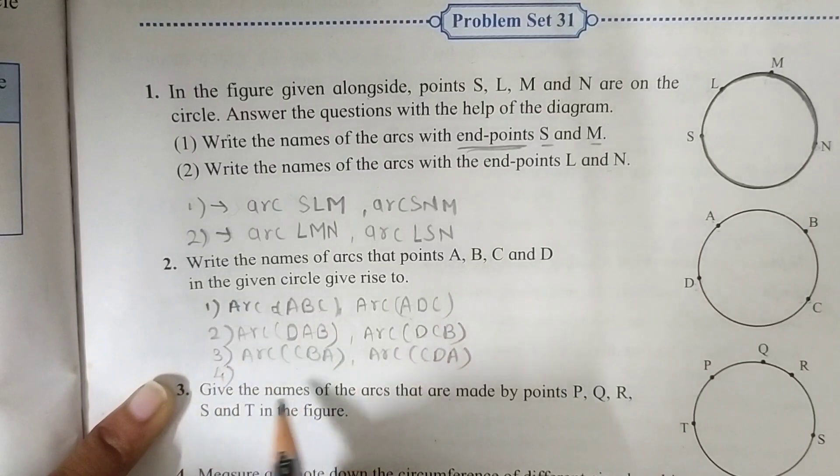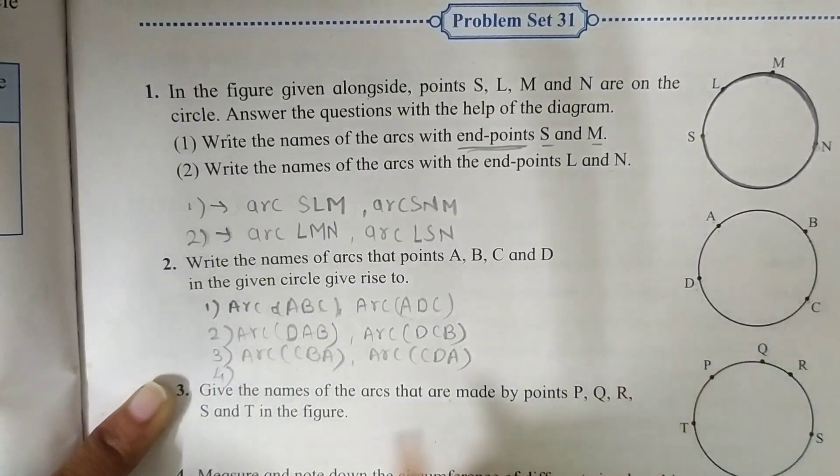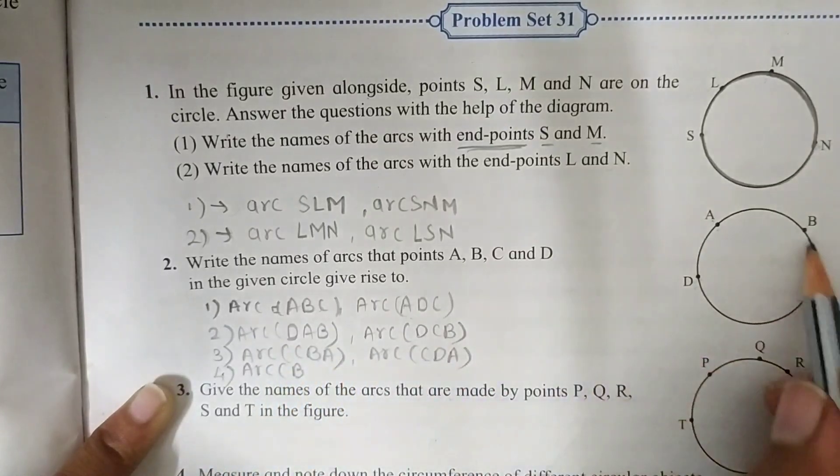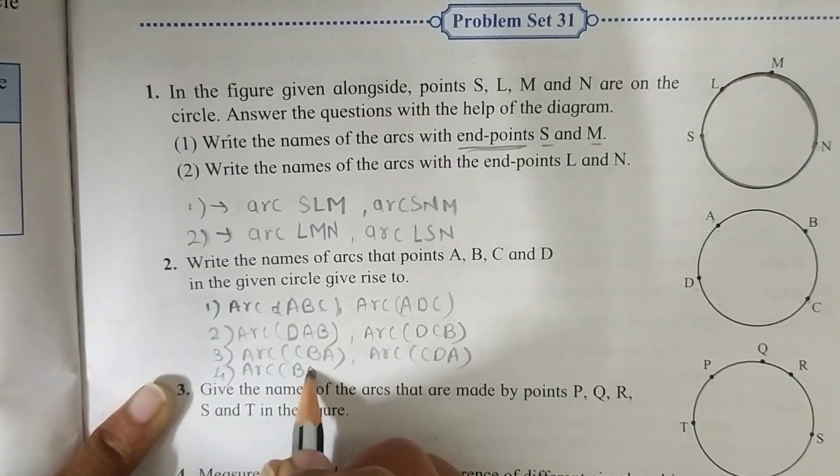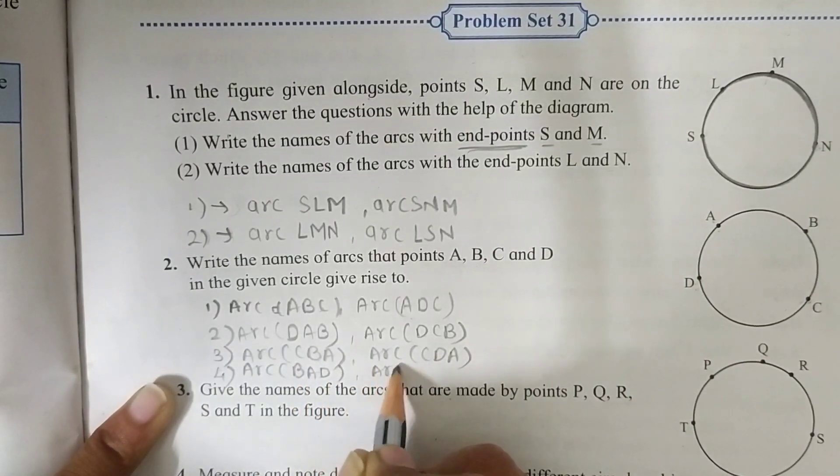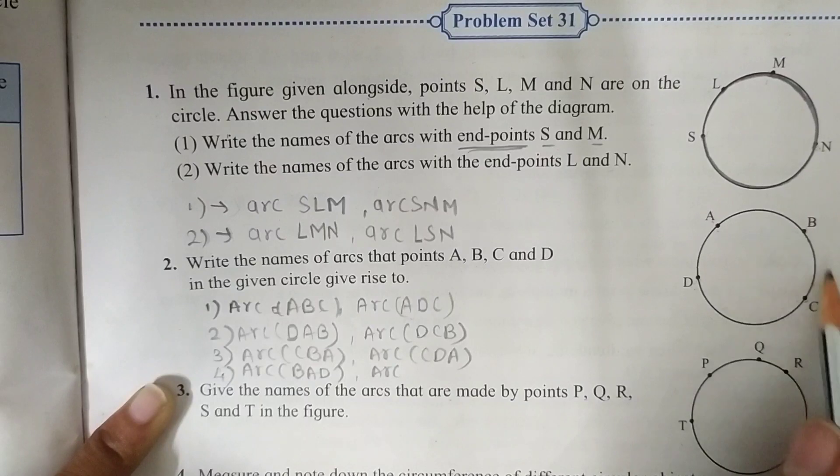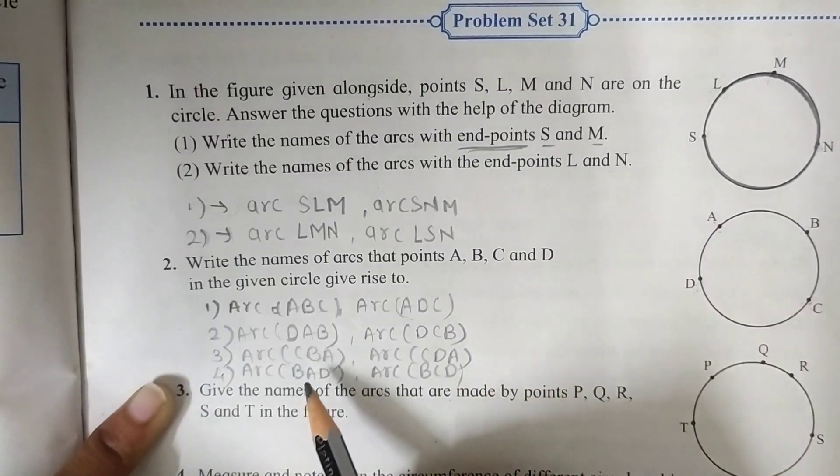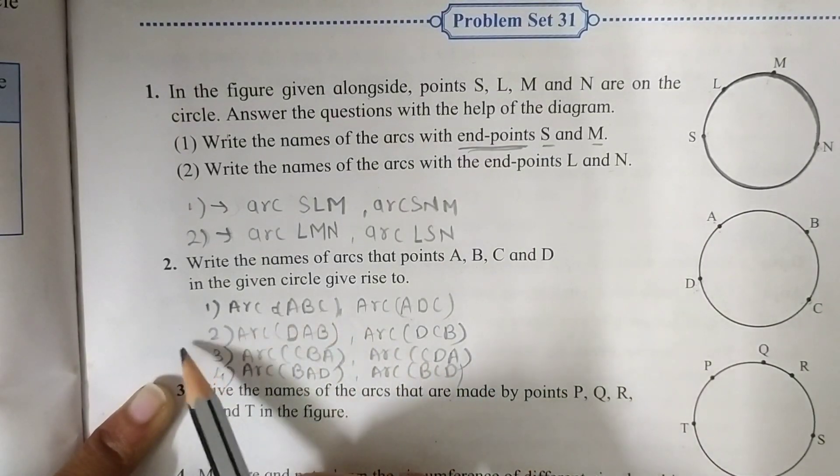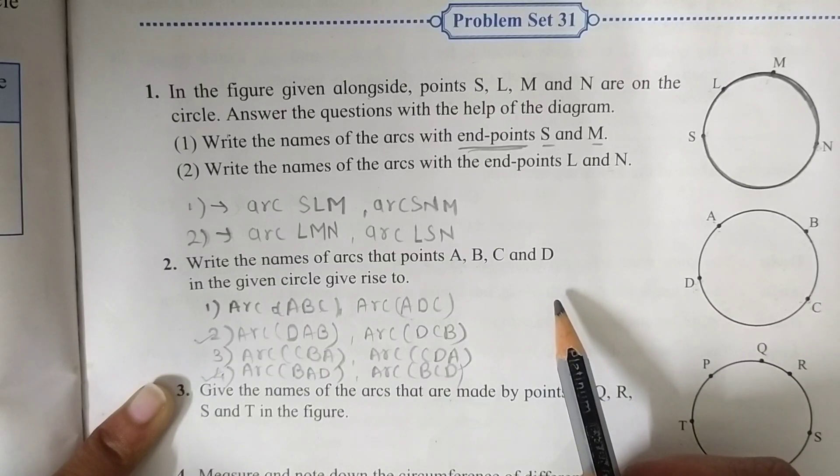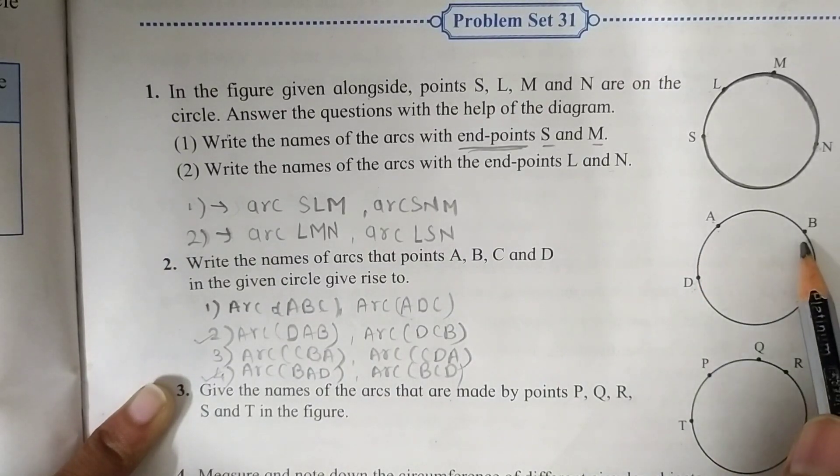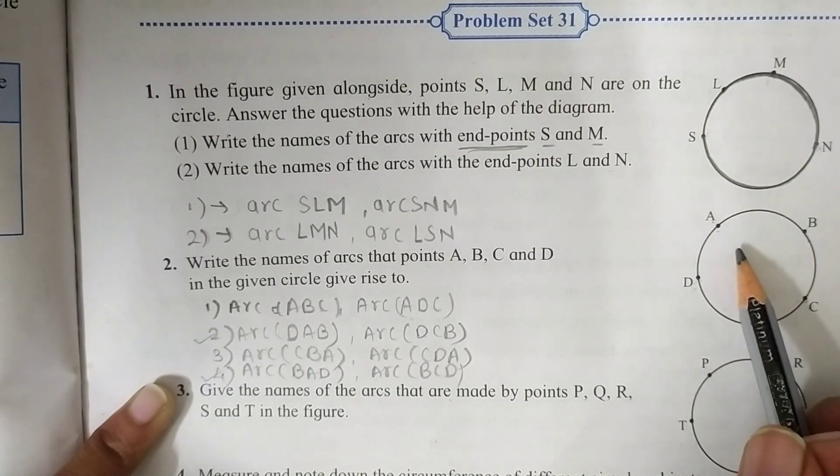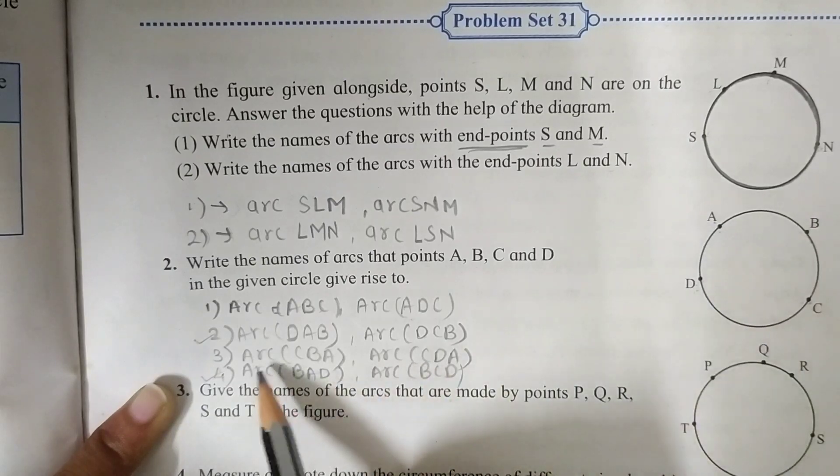Now fourth one is, we are going to start from now B. Arc B, A, D. And arc B, C, D. When you observe our second and fourth answer, you can see that the arc are same. But their starting point are different. So we have to write like this.